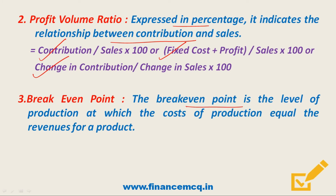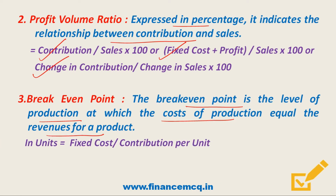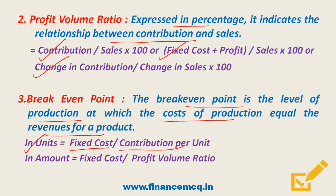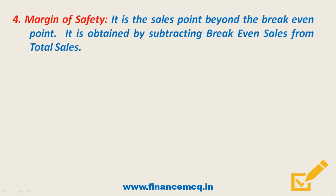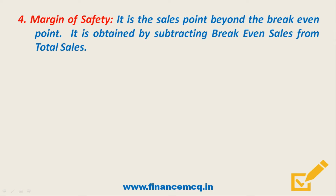The next tool is the Breakeven Point (BEP). The breakeven point is the level of production at which the cost of production equals the revenue for that product. When calculated in terms of units, the formula is: Fixed Cost divided by Contribution per Unit. When expressed in terms of amount, it is calculated as: Fixed Cost divided by Profit Volume Ratio.